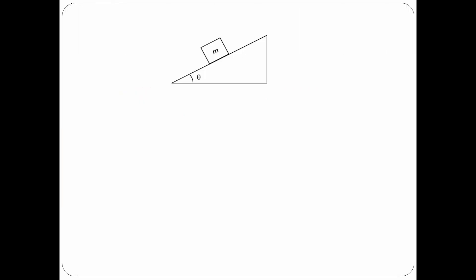This topic reviews some formulas that you need to know when dealing with inclined planes. Let's say we have a box that rests on the inclined plane. The force that acts perpendicular to the surface is called the normal force. The weight force is always in the negative y direction, and we have an angle of inclination. The component of weight force along the surface is Mg sin theta, and the component of weight force perpendicular to the surface is Mg cosine theta.